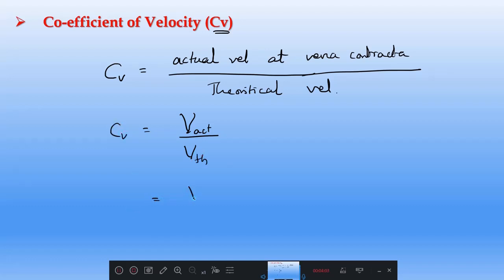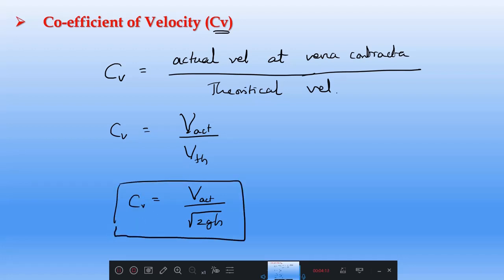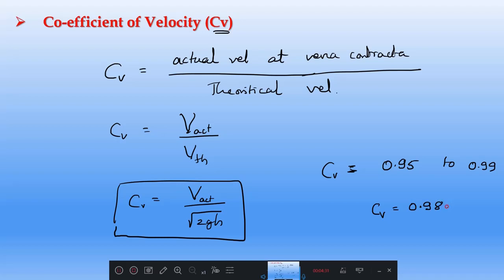Since v_theoretical equals root 2gh, we can write Cv = v_actual divided by root 2gh. Usually Cv varies from 0.95 to 0.99. If data is not given, you can consider Cv equal to 0.98 for a sharp-crested orifice.